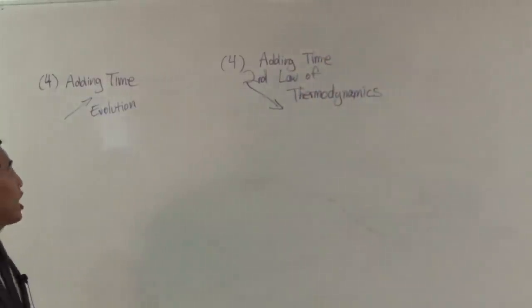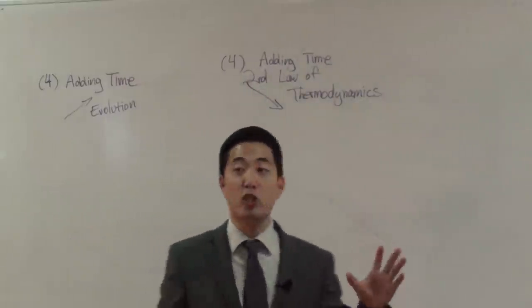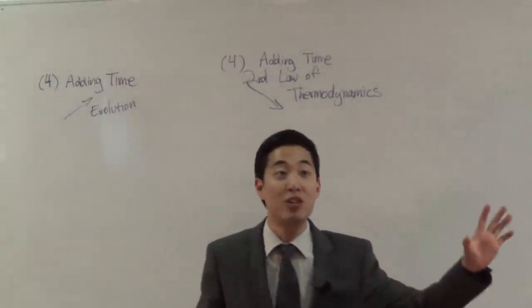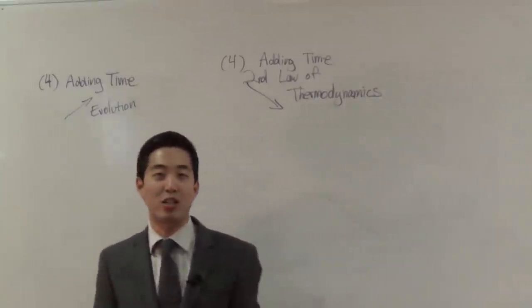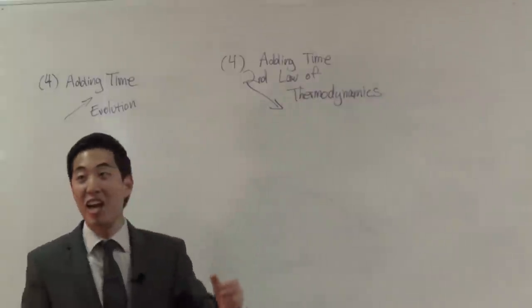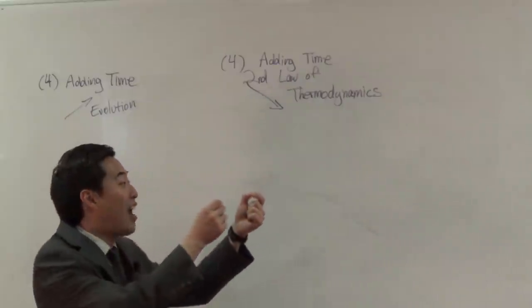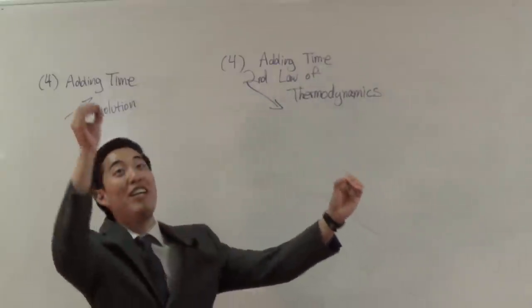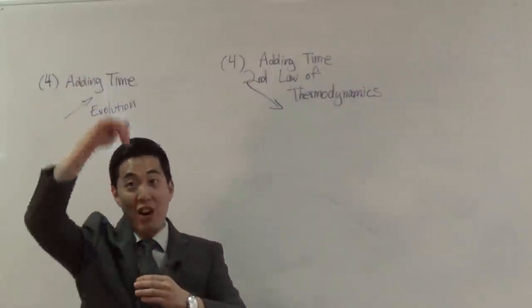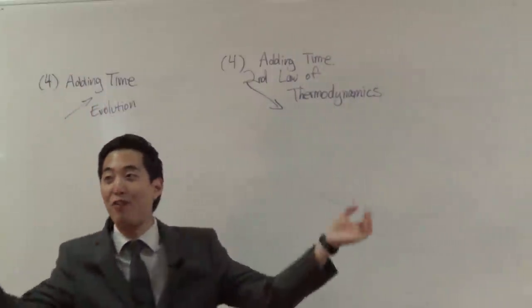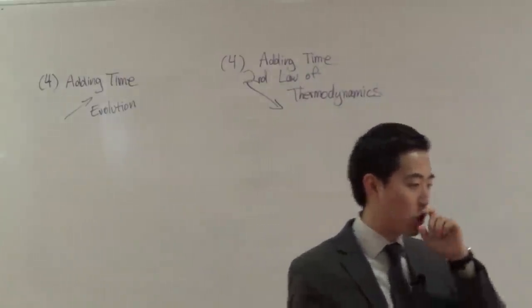When evolutionists say that little changes over millions of years will eventually produce new information, you can tell them: the second law of thermodynamics will break it apart even faster. Before this organism ever meets another organism and evolves into something new, the second law of thermodynamics cuts it off every time — because entropy is so much faster. Hebrews chapter 1 gives you the scripture to prove that.